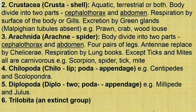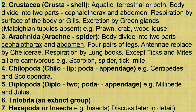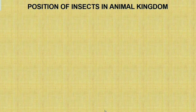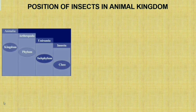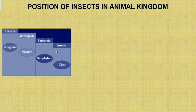The last class is Hexapoda, or Insecta. We will discuss insects in detail later. The position of insects in the animal kingdom: Kingdom Animalia, Phylum Arthropoda (also called Uniramia), Class Insecta. This classification can be seen clearly in the diagram.